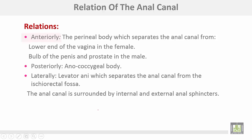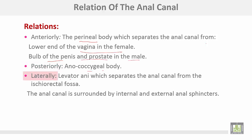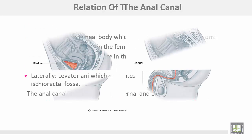The anal canal anteriorly is related to the perineal body, which separates the anal canal from the lower end of the vagina in the female, and the bulb of the penis and the prostate in the male. Posteriorly it is related to the anococcygeal body in both male and female. Laterally it is related to the levator ani, which separates the anal canal from the ischiorectal fossa. The anal canal is surrounded by internal and external anal sphincters.